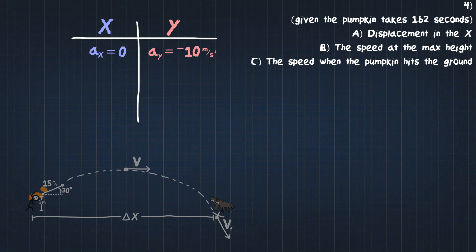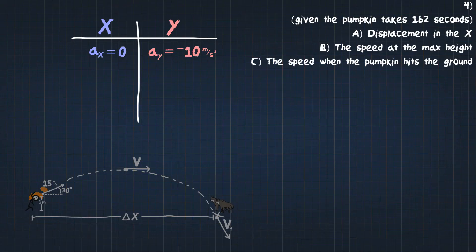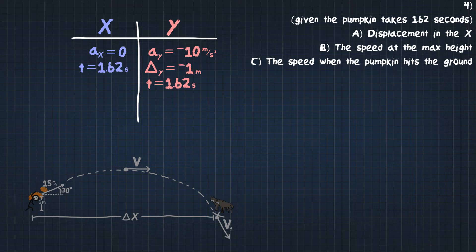We know that this pumpkin is going to eventually be falling down 1 meter from where it started. So displacement in the y is equal to negative 1 meter. We also know it's going to be taking 1.62 seconds for it to hit the ground. And that's for both the x and y. The only thing that's the same for both is the time.